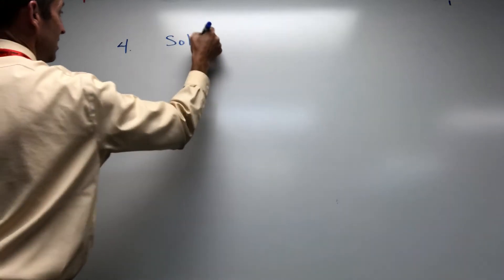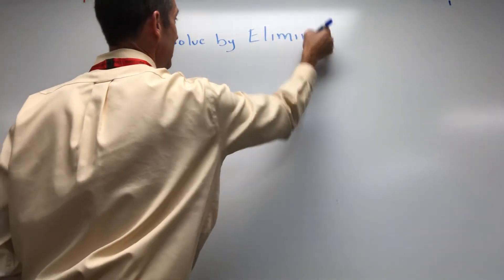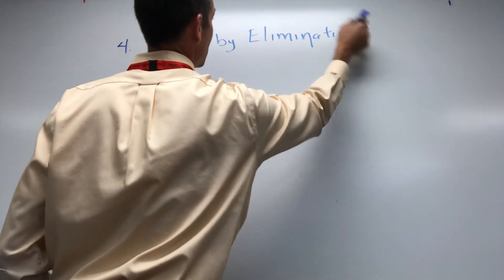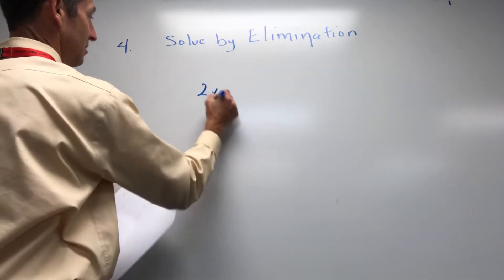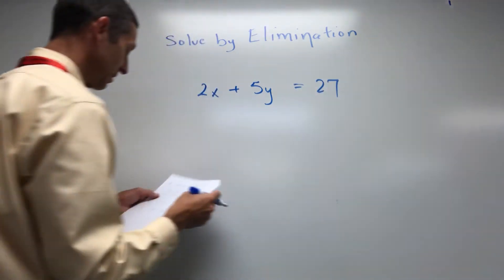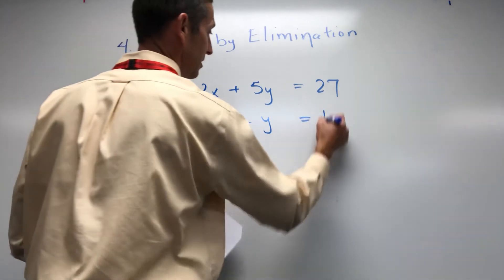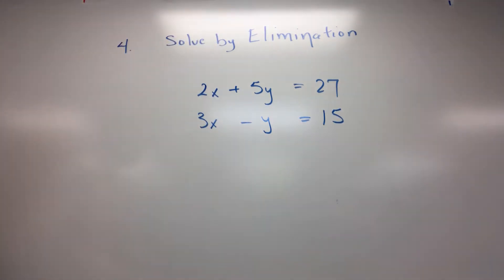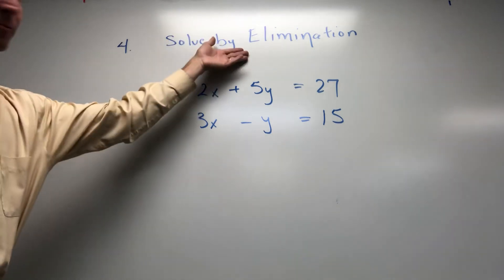Number four: solve by elimination. So let's put your equations up here to solve for x and y. 2x plus 5y equals 27. 3x minus y equals 15. So fourth question, solve for x and y. Run some elimination.